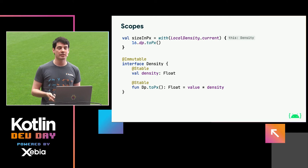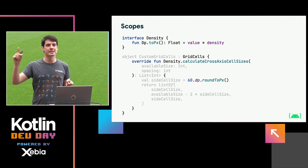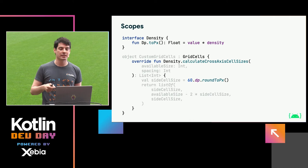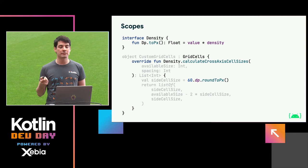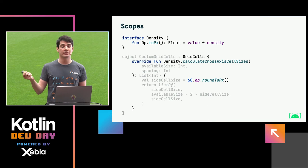This is implemented very similarly to the ColumnScope we've seen before. It's an interface which contains a member extension, making sure you can only use that extension if you are already in the scope of Density. The interface also contains the value required to do that calculation. There are also other places in Compose — like a grid API — where you don't need to manually scope yourself into a density object but instead receive that as a scope automatically, because the interface function is defined as a member extension on Density.